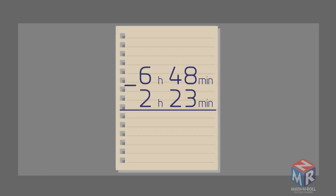Subtracting. Let's try an example. The numbers on the top are bigger than the numbers on the bottom. Because of that, we can subtract 23 from 48 normally. 8 minus 3 gives us 5, and 4 minus 2 gives us 2. So we have 25 minutes. We are going to do the same thing for the hours. 6 minus 2 equals 4 hours. So the answer is 4 hours and 25 minutes.